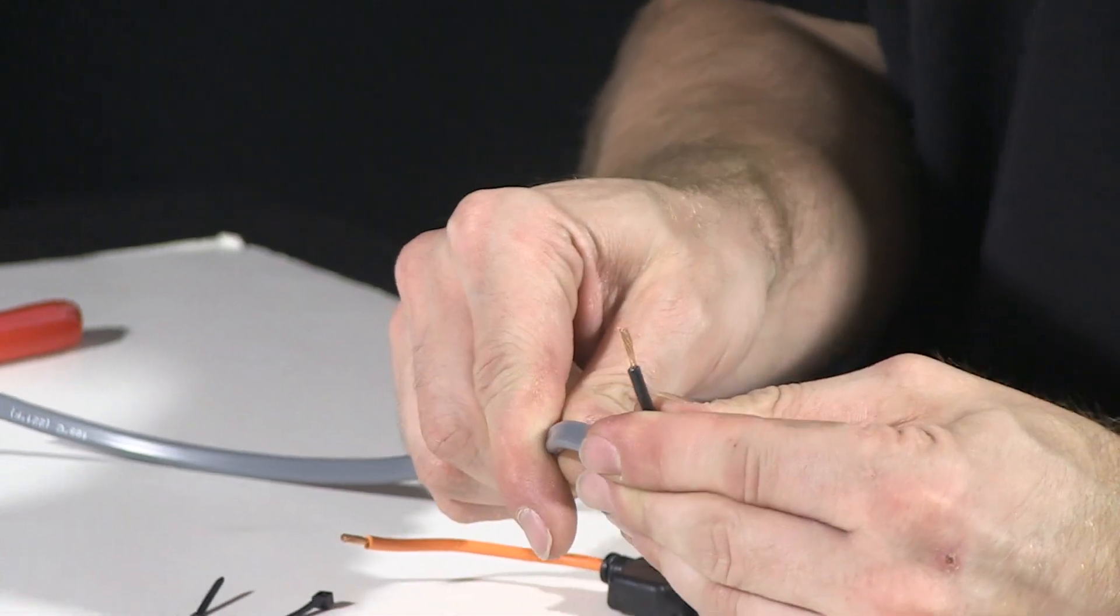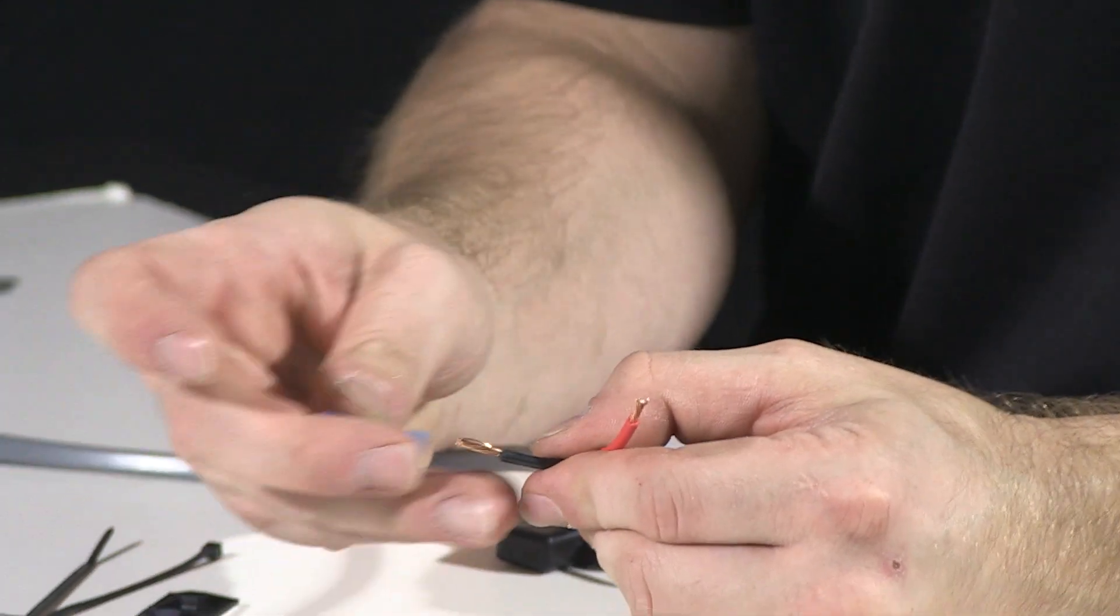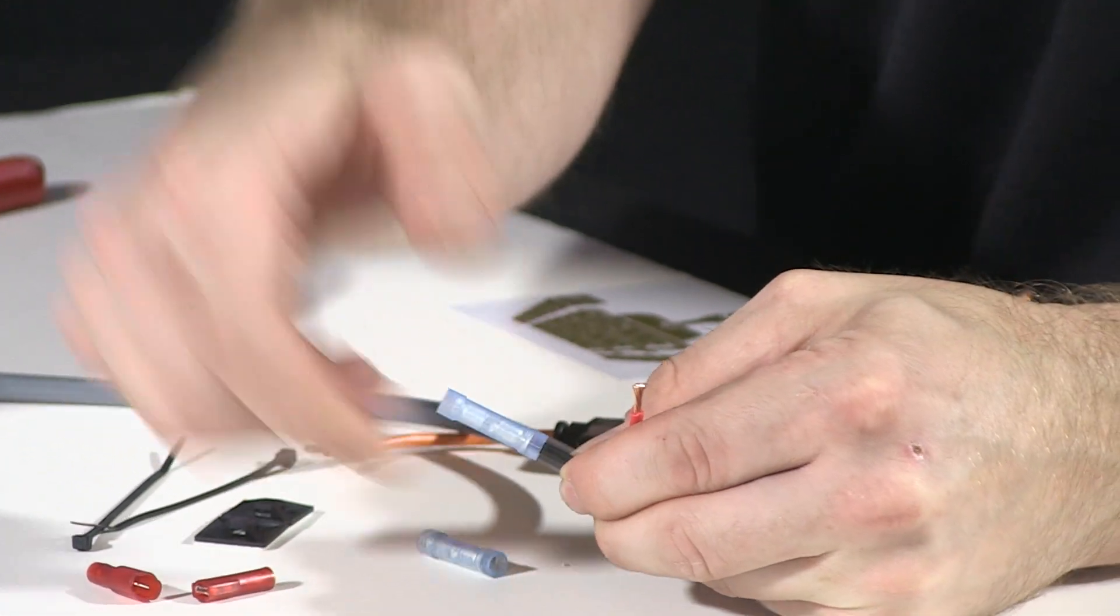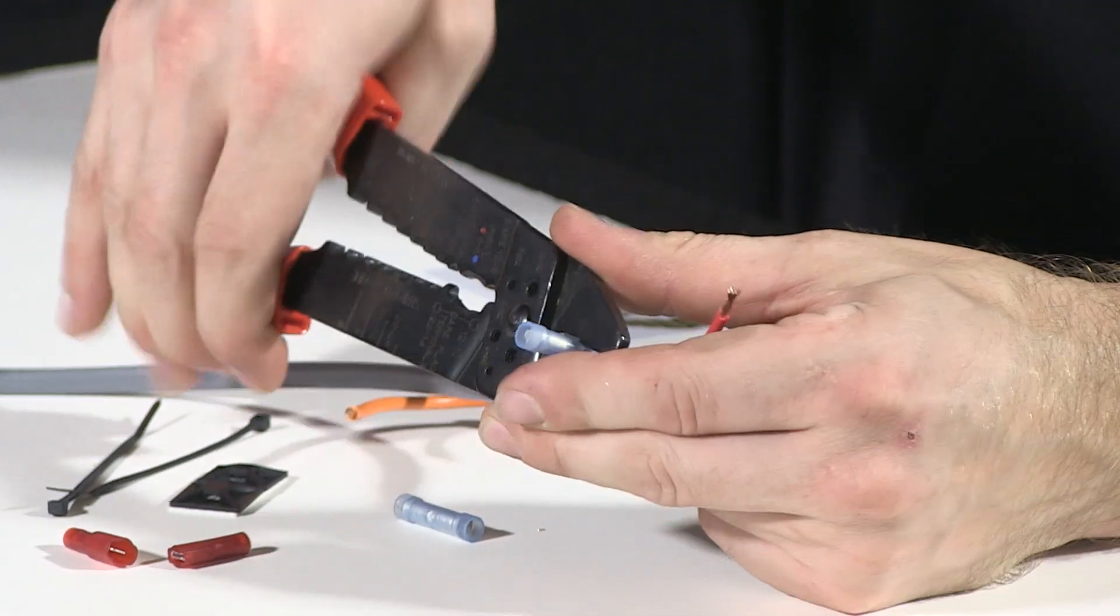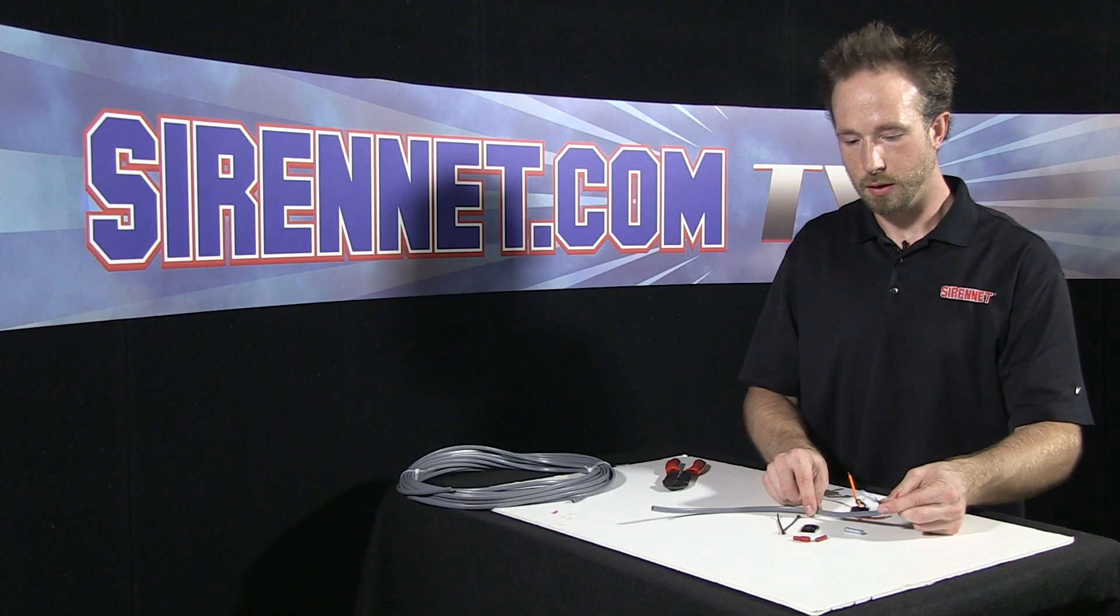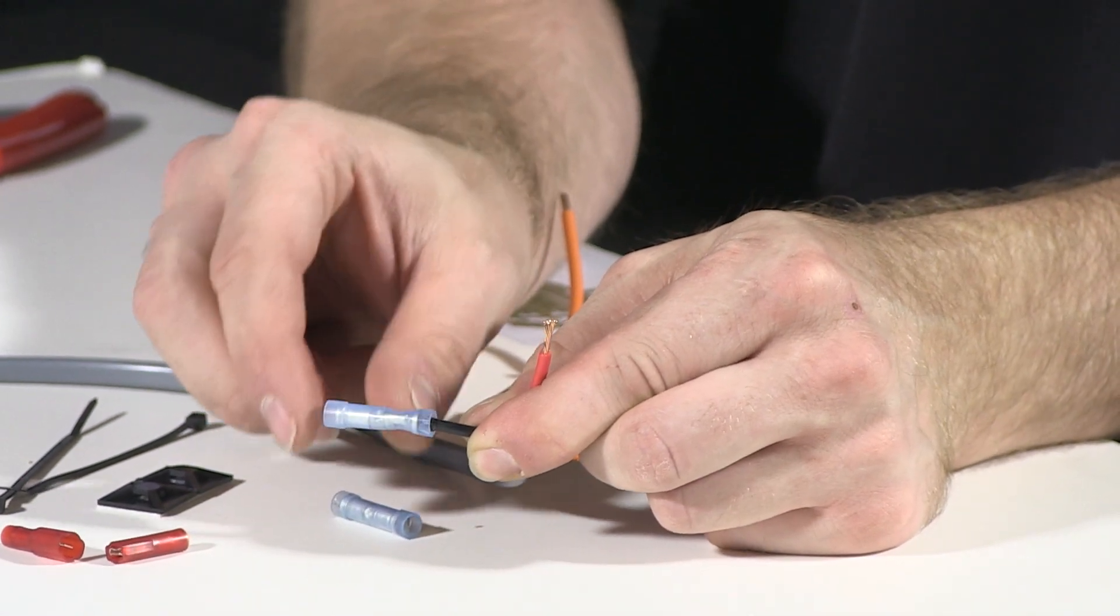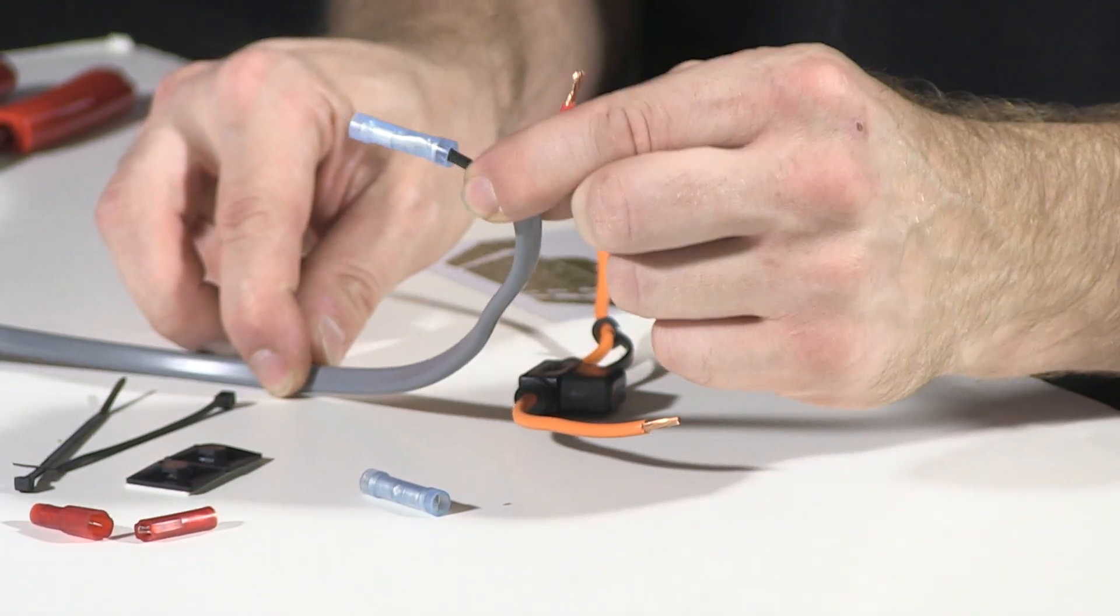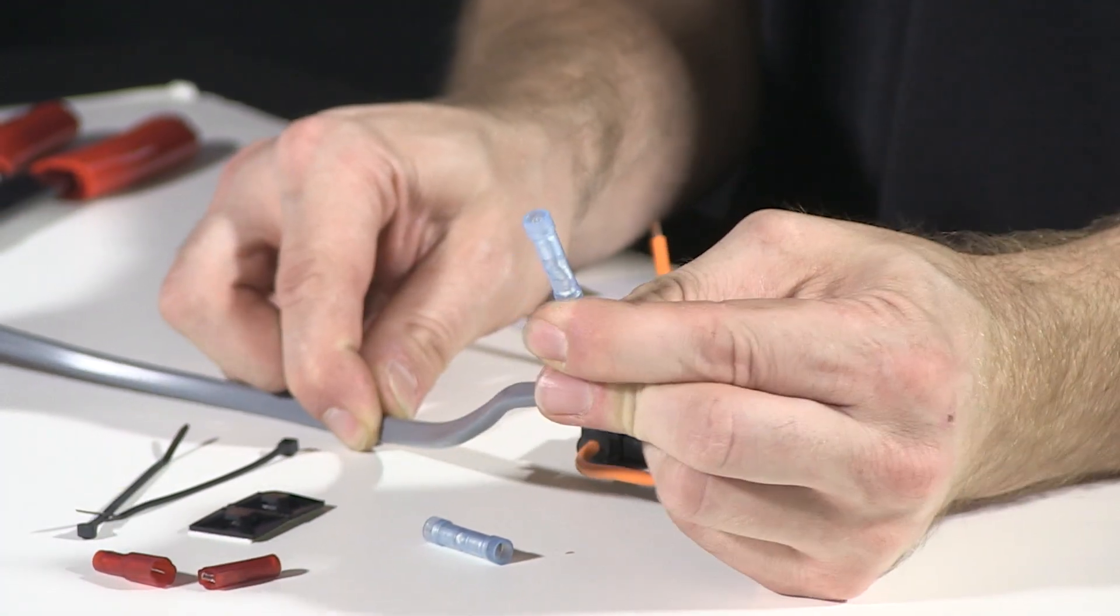For the black wire here we're going to take a butt connector, slide it on, and give it a nice tight crimp. It's always a nice idea to give it a little pull and make sure your wire is in your connector nice and tightly, that way when you're routing your wires during your installation you know that you won't have any connectors come loose on you. So that's an example of the butt connector.